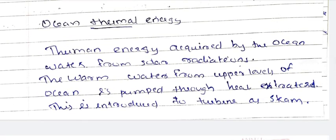Next is ocean thermal energy. Thermal energy is acquired by ocean water from solar radiation. Warm water from the upper levels of the ocean is pumped through and the heat is extracted from that. This is introduced to the turbine as steam.